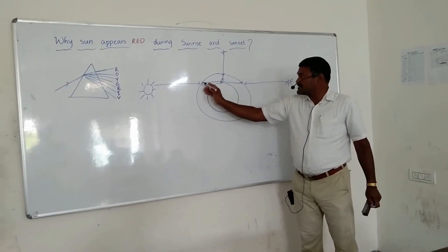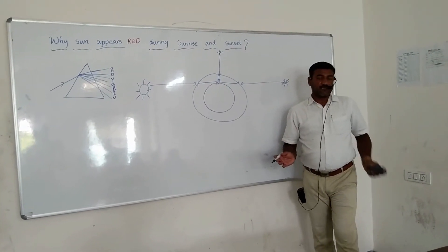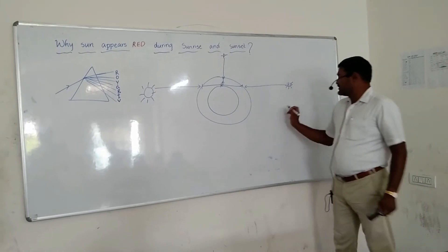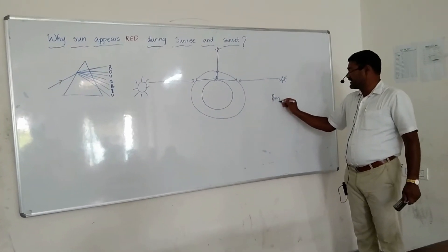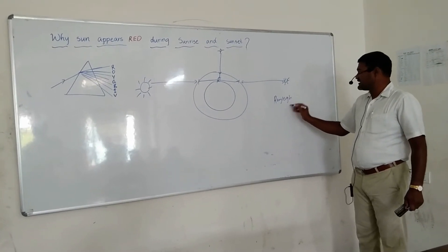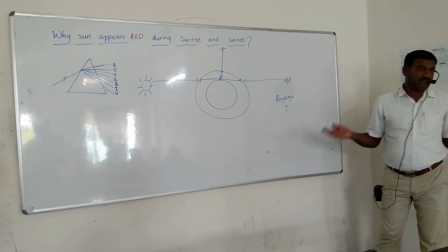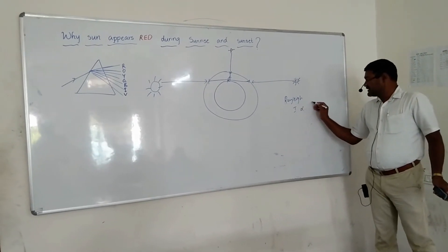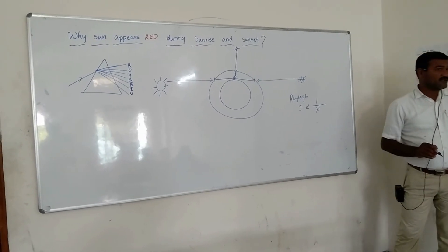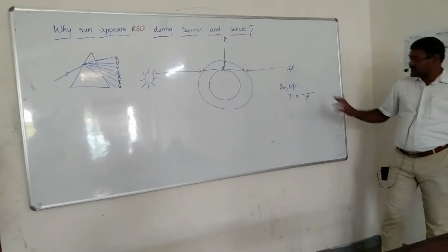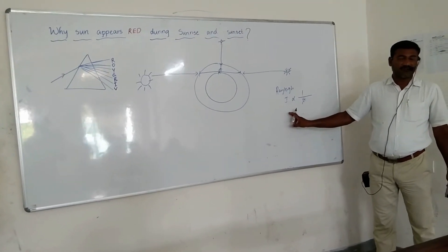When sunlight passes through a large amount of atmosphere, it undergoes scattering. There is one English physicist named Rayleigh. He said that the intensity of scattering is inversely proportional to the fourth power of the wavelength. This means lesser the wavelength, more is the scattering; and more the wavelength, less is the scattering.